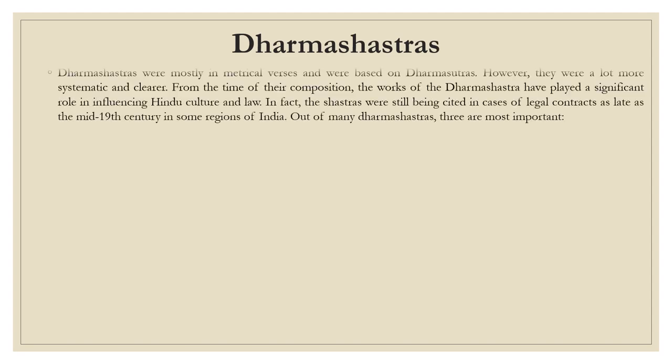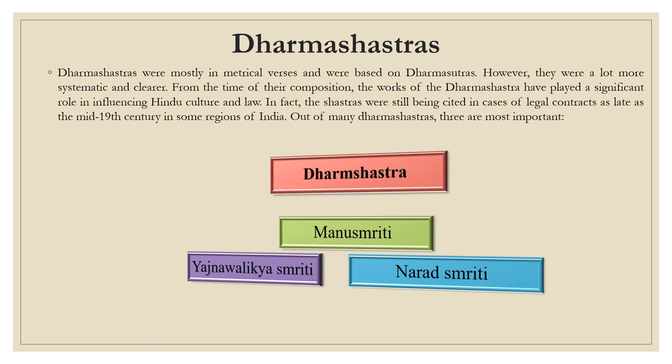Next is Dharmashastra. Dharmashastra were mostly in metrical verses and were based on Dharmasutra. Dharmasutra is basically the sutra of dharm, that is its origin. Shastra means a detailed study; Dharmashastra is basically a detailed study of dharm. They were a lot more systematic and clearer. From the time of their composition, the works of Dharmashastra have played a significant role in influencing Hindu culture and law. Out of many Dharmashastras, there are three most important: the first one is Manusmriti, second is Yajnavalkya Smriti and third is Narad Smriti.